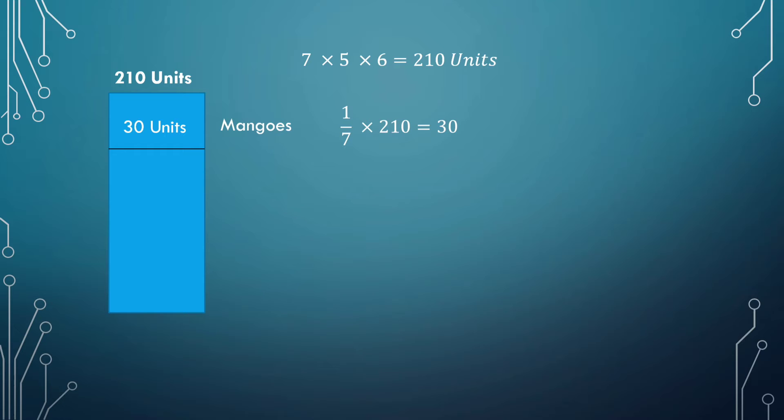They went on to say that 3/5th of the remaining amount is spent on oranges. To get the remaining amount, we had 210 units in the first instance, but we know now mango represents 30 units. So the remaining amount will be 210 minus 30, which is 180 units. So that 3/5th of 180 units would be 108 units, and this is the number of units that were spent on oranges.